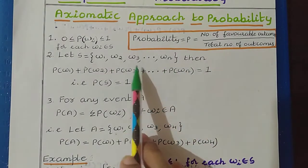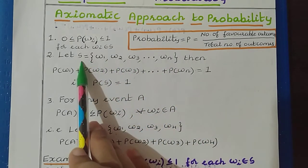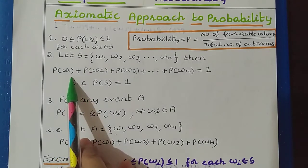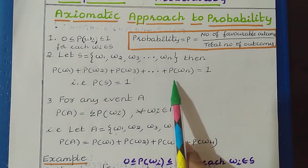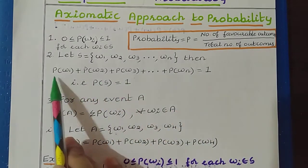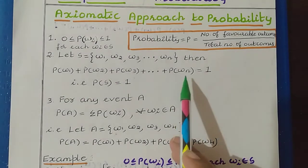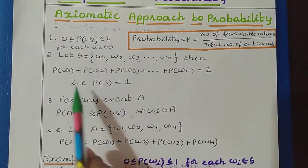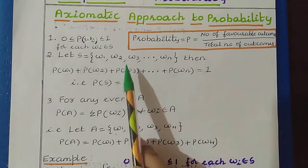In this case, we have taken the sample space with these outcomes. So the probability of S we can write as: P(ω1) + P(ω2) + P(ω3) + ... + P(ωn) = 1. If you add the probability of the outcomes of the sample space, then you get the answer as 1. So from the second rule, we can say the probability of the sample space is equal to 1, and that we can get by adding the probability value of the outcomes.